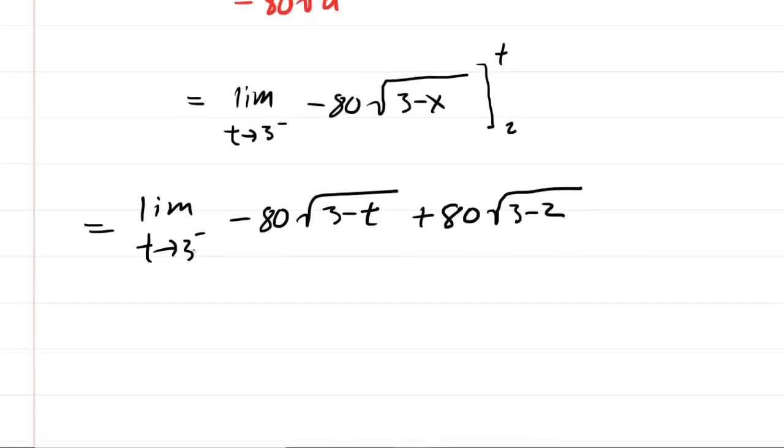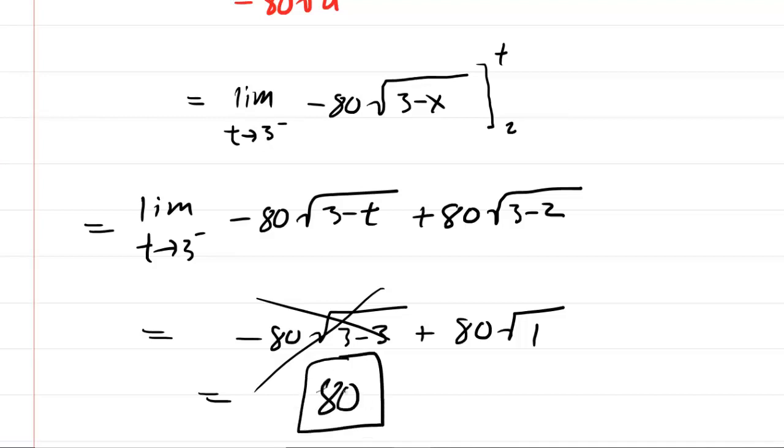So at this point you can basically plug 3 in for t and see what happens. So you'll have negative 80 times the square root of 3 minus 3 plus 80 times the square root of 1. Well, this is nice because 3 minus 3 is 0, and 0 times negative 80 is 0. So this actually disappears. It goes to 0. We're left with 80 times the square root of 1, which of course is just 80.